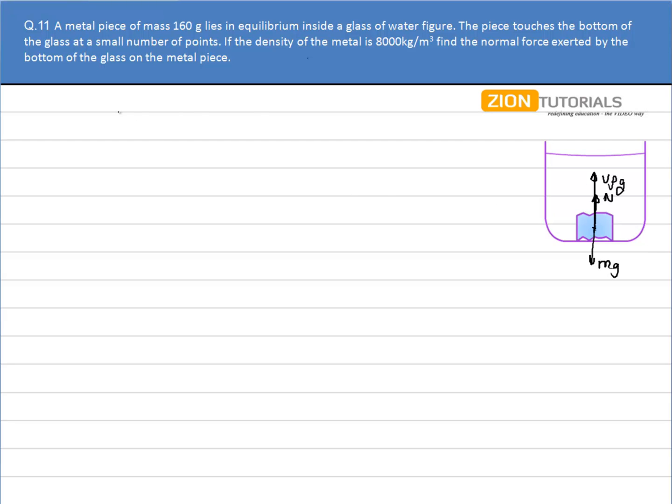Now this is the equilibrium condition. So at equilibrium I can write Mg is equal to normal reaction N plus Vrg. So the normal force that is what I have to calculate will be given by Mg minus Vrg.